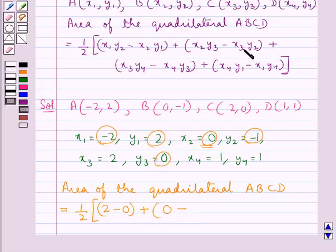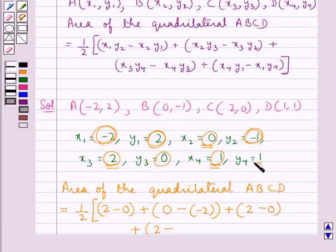Minus x₃y₂, which is 2 into (-1) that is -2, plus x₃y₄, that is 2 into 1 which is 2, minus x₄y₃, that is 1 into 0 which is 0, plus x₄y₁, which is 1 into 2 that is 2, minus x₁y₄, that is (-2) into 1 which is -2.